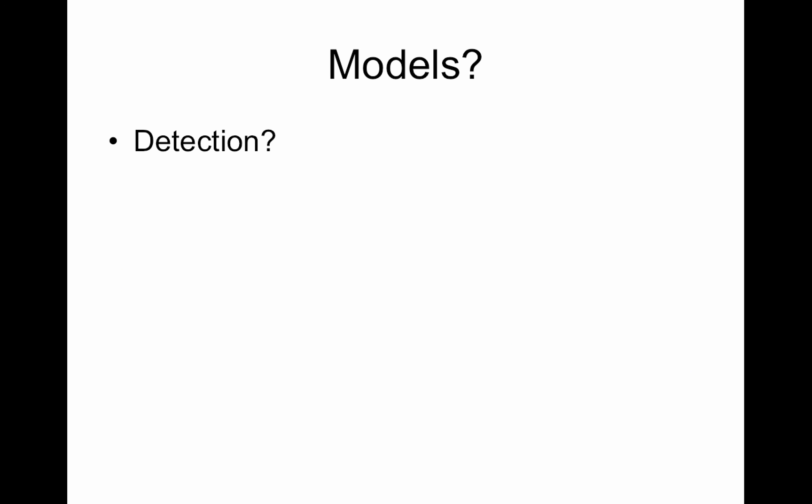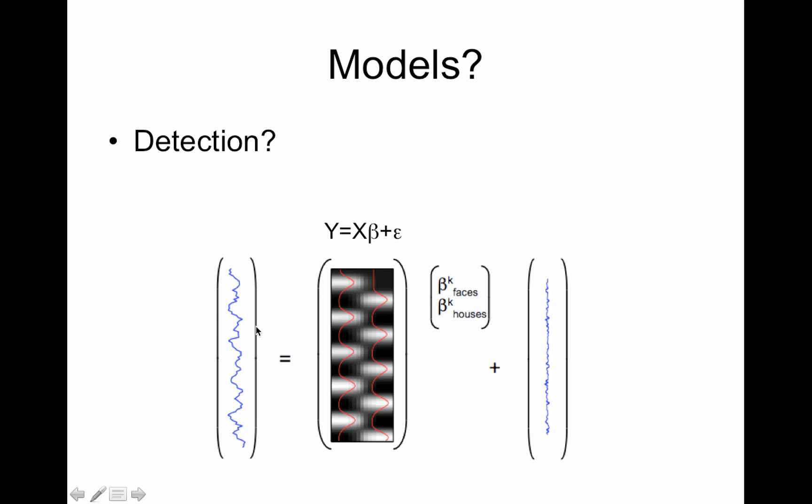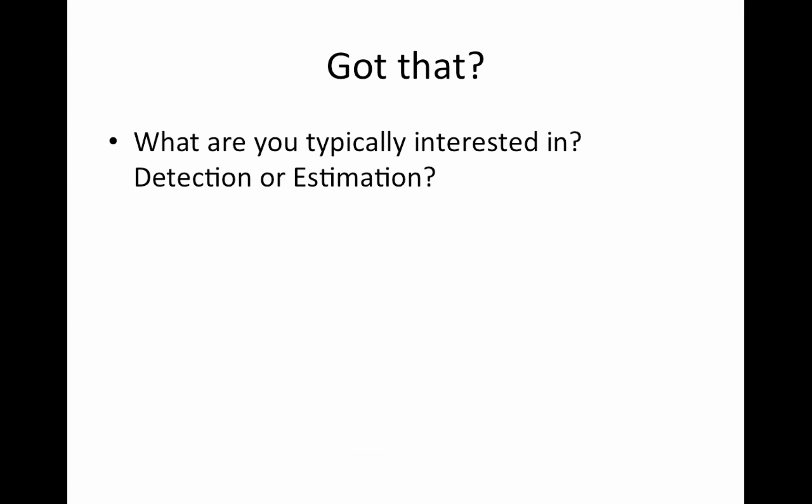Okay so for estimation, for estimating the shape, you need a model that's going to estimate the shape. Whereas for detection, this is probably what you most commonly use. It's your box car convolved with a canonical HRF and we typically use the double gamma. If you're not, you should. And if you don't know why you should, then you can go back to the level one modeling lecture. So that's typically what we use. You get a single parameter which corresponds to the amplitude.